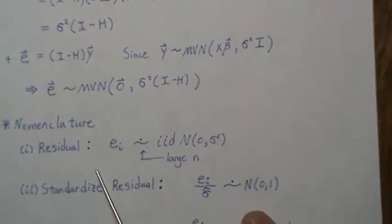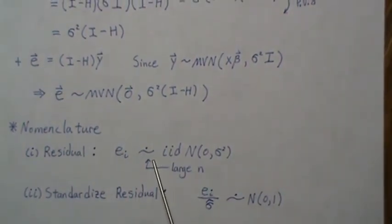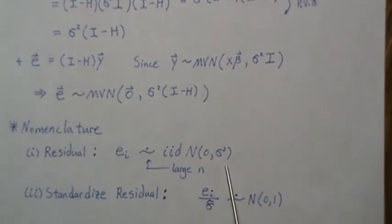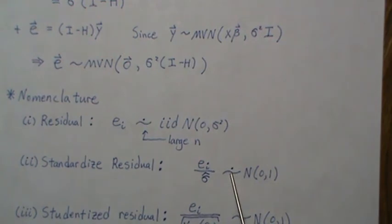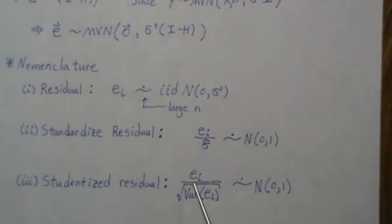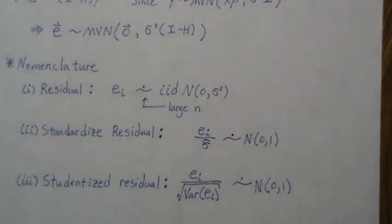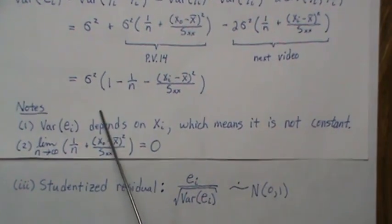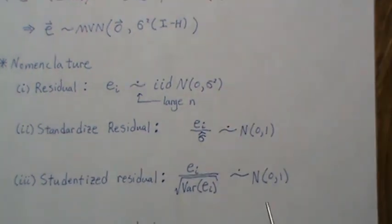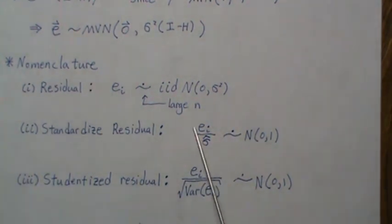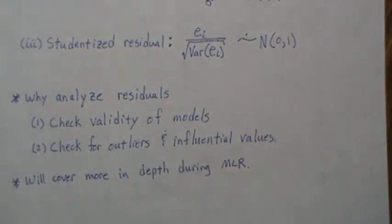In summary, for large n the residuals eᵢ are approximately IID Normal(0, σ²). A standardized residual divides eᵢ by the square root of the mean square error; asymptotically it converges to standard normal. A studentized residual divides by the square root of the actual variance of eᵢ — which we calculated earlier — and is also approximately standard normal, but closer to normal than the standardized version.